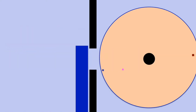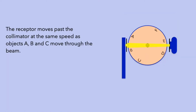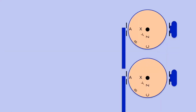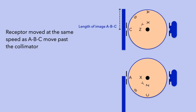Next, let's consider structures D, E, and F located on the opposite side of the disc, represented here by a square. Note that these structures are imaged in the opposite direction and that their images are markedly magnified and blurred. A key element of image layer formation is the speed of the receptor relative to the objects being imaged. When the receptor moves at the same speed as structures A, B, and C past the collimator, the length of the registered image allows structures A, B, and C to be represented with minimal horizontal distortion. In contrast, the same length of the registered image represents structures X, Y, and Z with marked horizontal distortion.